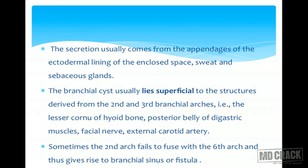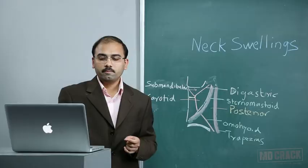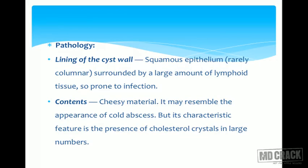The secretions in the branchial cyst come from appendages of the ectodermal lining — sweat and sebaceous glands. The cyst usually lies superficial to structures derived from the second and third branchial arches: the lesser cornu of the hyoid bone, posterior belly of digastric, facial nerve, and external carotid artery. Pathologically, the cyst wall is lined by squamous epithelium surrounded by a large amount of lymphoid tissue. Contents are cheesy material resembling a chronic or tubercular abscess. The hallmark finding is cholesterol crystals in the aspirated fluid.